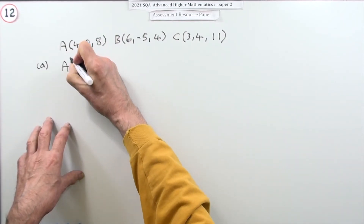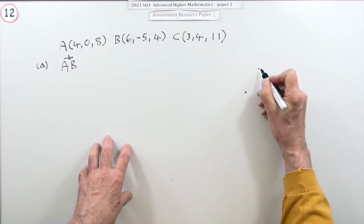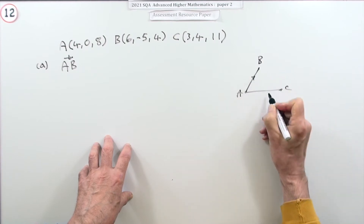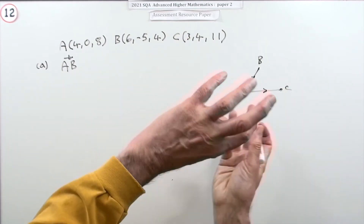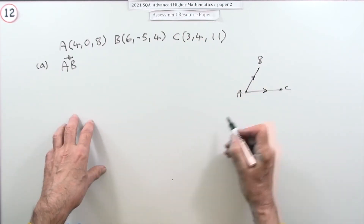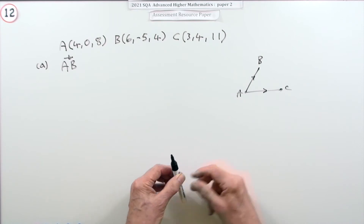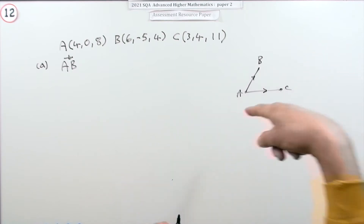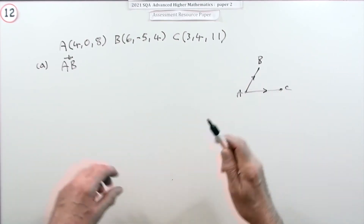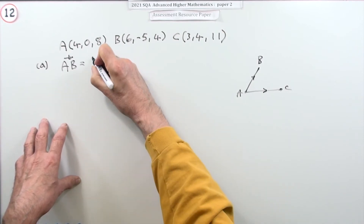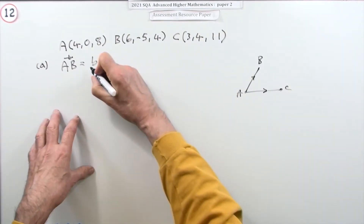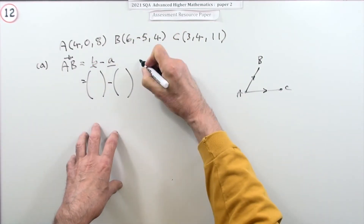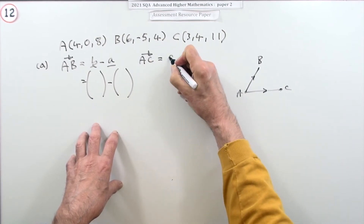Taking directed line segment AB with points A, B, and C: we want AB and AC. In an exam you just set it all out — B minus A, and C minus A. So AB: B is (6, -5, 4) and A is (4, 0, 8), giving the components. And AC: C is (3, 4, 11) minus A (4, 0, 8).